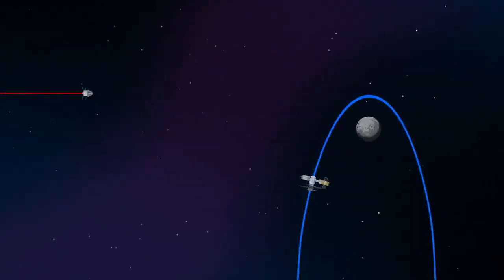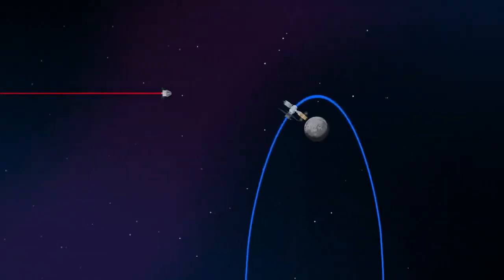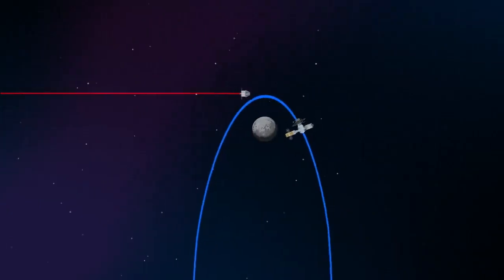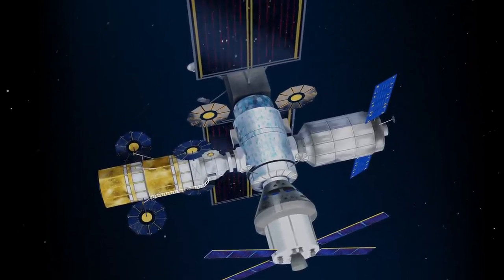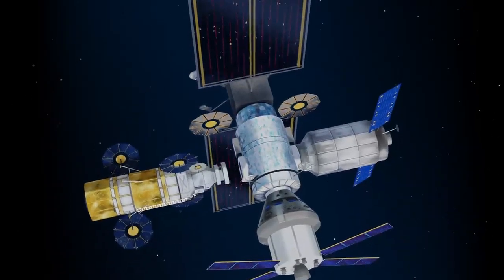Returning to our crew as they approach Gateway, the Orion must match the elliptical orbit of the station in order to successfully dock. Once on board, pre-selected crew members transfer to the lunar lander, while those assigned to Gateway remain on station.